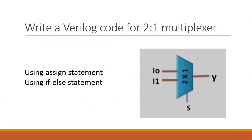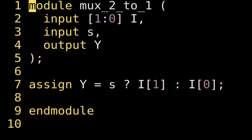Let us start with a very simple question where you have to write a Verilog code for a 2-to-1 multiplexer. The first question is to use an assign statement, and in the second question I will ask you to use an if-else statement. I have covered how to implement a multiplexer using if-else statement in a separate video — the link is in the description and in the info bar. For now, those who know the answer please write it down in the comment section, otherwise I am going to tell you, because it is a very simple question.